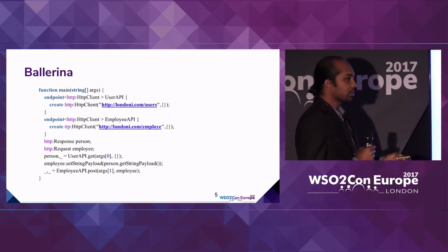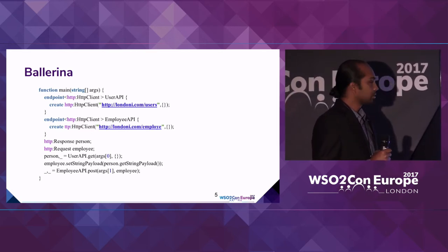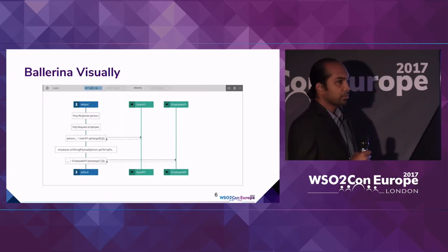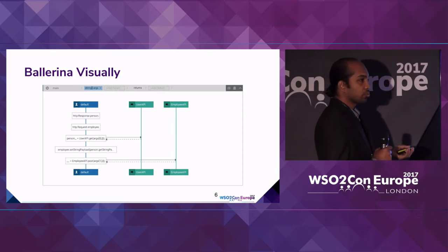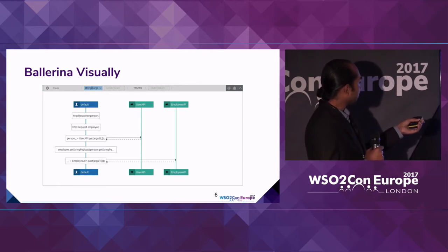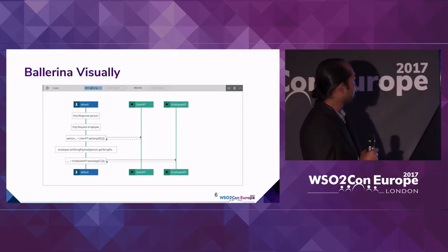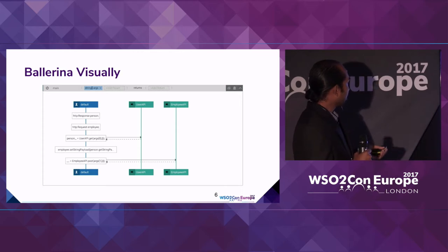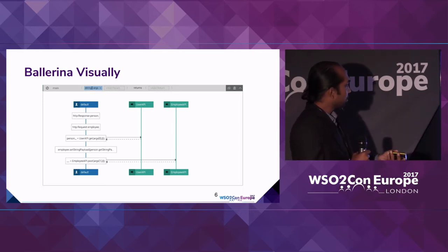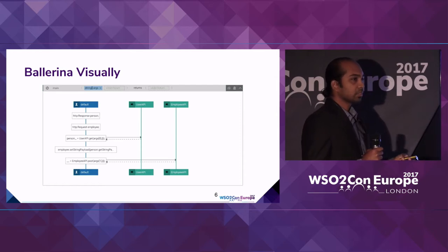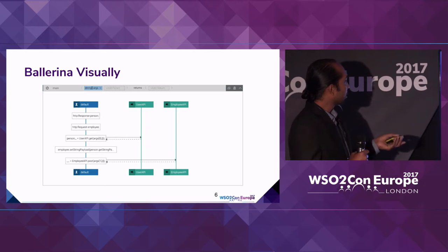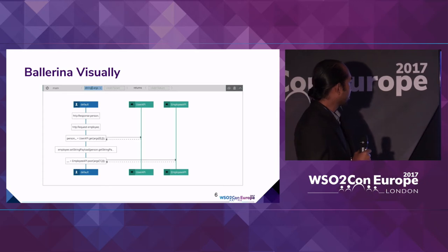Even this — if you know Ballerina source — you should be able to understand it quite easily. And this is the same program represented visually. The immediate advantage is that you can easily explain what this program does to a non-technical person. Basically, we have two endpoints: user API and employee API. We do a GET call to the user API and then post the payload to the employee API. Having a graphical representation makes it easy to understand complex programs, especially with integration where there's a lot of communication happening.